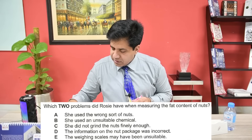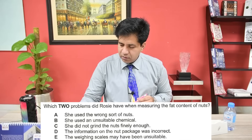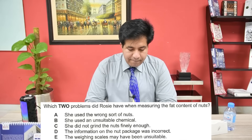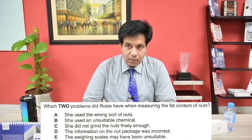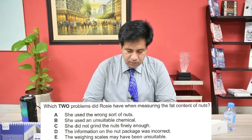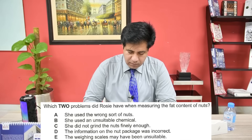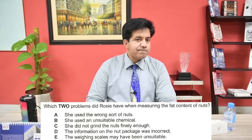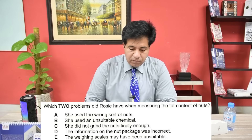[Audio]: Then there's that experiment I did measuring the fat content of nuts to see if the nutritional information given on the packet was accurate — the one where you ground up the nuts and mixed them with a chemical to absorb the fat. Yes, my results were a bit problematic. The fat content for that type of nut seemed much lower than it said on the package, but I reckon the package information was right. I think I should probably have ground up the nuts more than I did. It's possible that the scales for weighing the fat weren't accurate enough too. I'd really like to try the experiment again sometime.